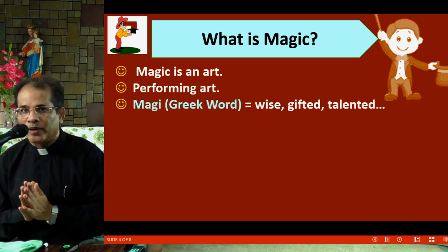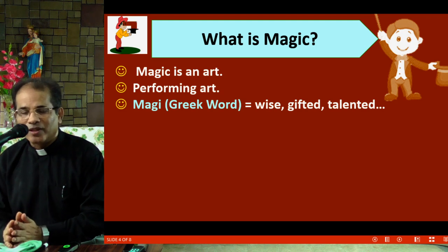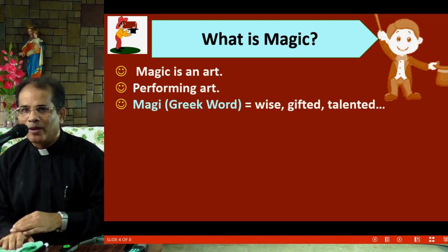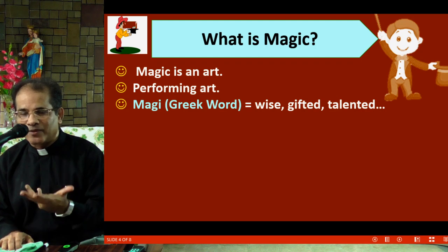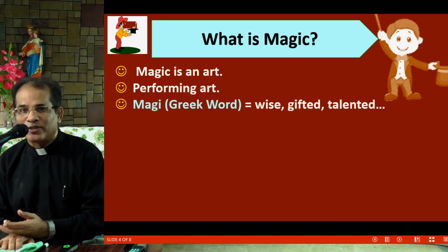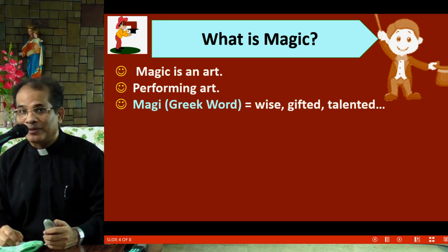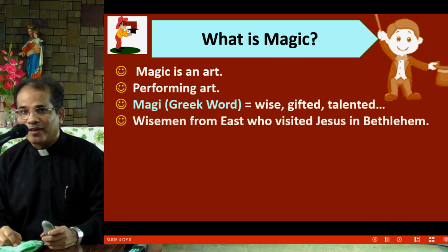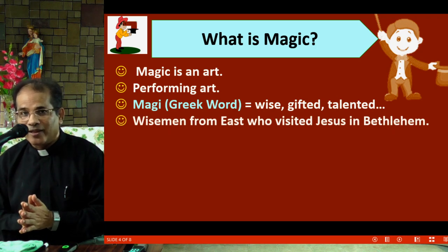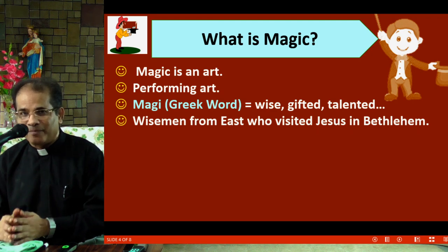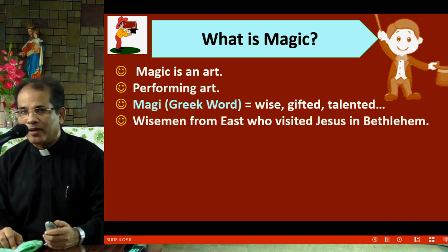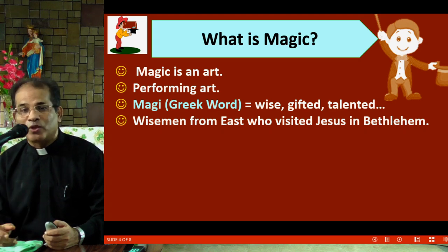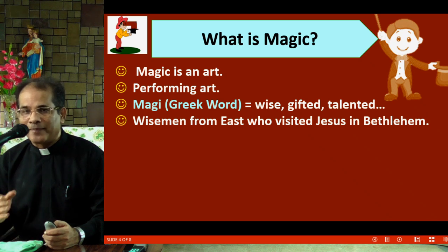The word magic is a Greek word — magi, magus — which originally means wise, talented, gifted. A person with a gifted nature, a person with talents, or a wise man. You remember in the Bible there were magicians, or they were called magi — the same Greek spelling. These wise men visited Jesus in Bethlehem. They were wise people with a lot of gifts, and that is how the word is used for these people. In the early times, most of the magicians were priests too. This is how wise men and magi were all interconnected.